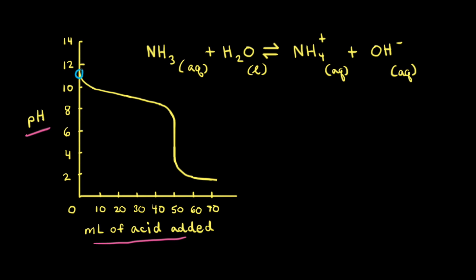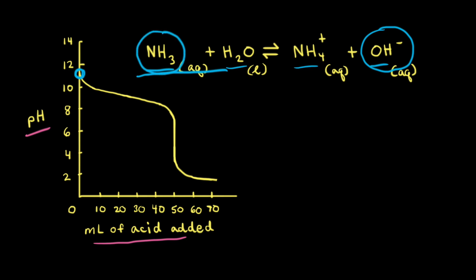Looking at the first point on our titration curve, the pH is relatively basic — this is before any strong acid has been added. The pH is basic because we have an aqueous solution of ammonia, which reacts with water to produce ammonium cations and hydroxide anions. The equilibrium favors the reactants, so at this point we have mostly ammonia and very little ammonium.